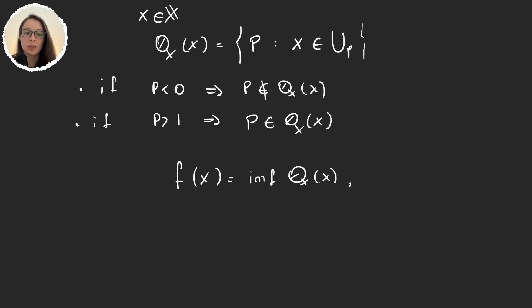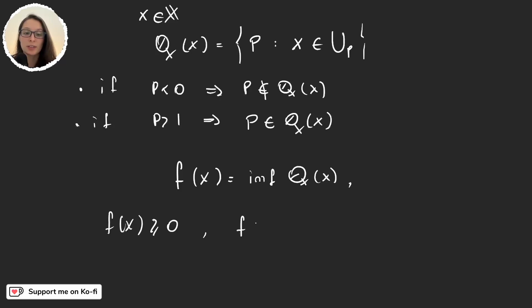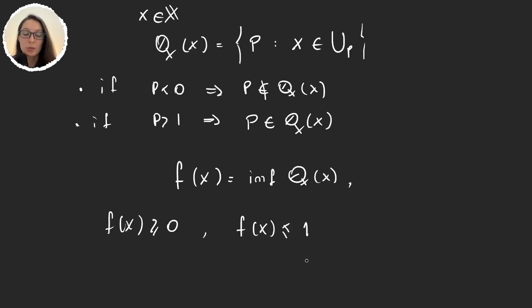Obviously f(x) is greater than or equal to 0, because we don't have any element smaller than 0, so 0 is a lower bound of Q(x). Also f(x) is going to be smaller than or equal to 1, because given that we have all the numbers greater than 1, the infimum of all those numbers will be 1 or smaller, so it will always be less than or equal to 1. Now let's see if f satisfies what we want in the theorem.